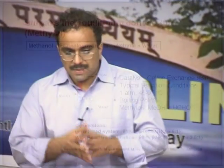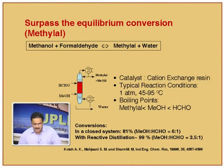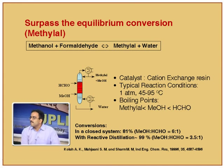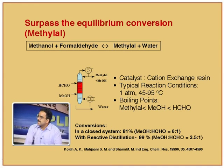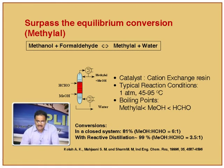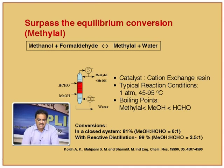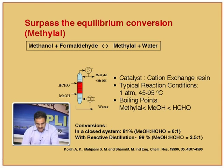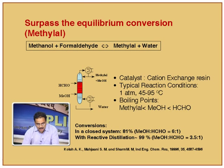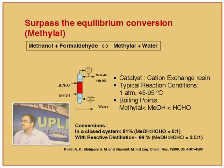Another example we worked on: methanol plus formaldehyde giving methylal plus water — a reversible acetalization reaction. The product methylal is highly volatile. Conducting this in a reactive distillation column shows enhancement in conversion — even reducing the methanol to formaldehyde ratio from 6 to 3.5 gives enhancement, and you can reach close to quantitative conversions.